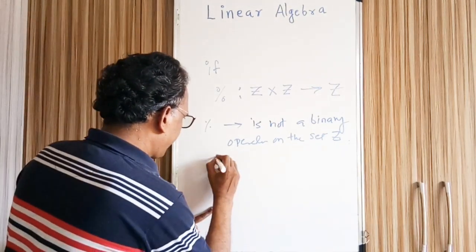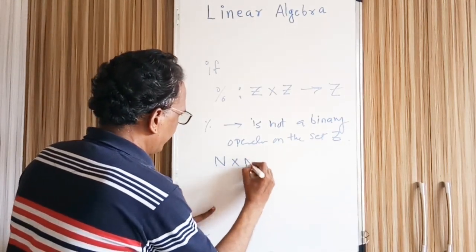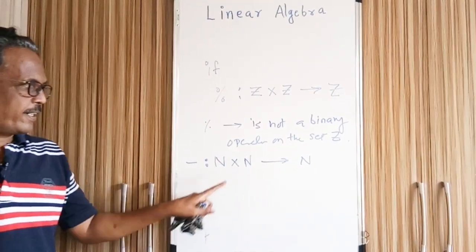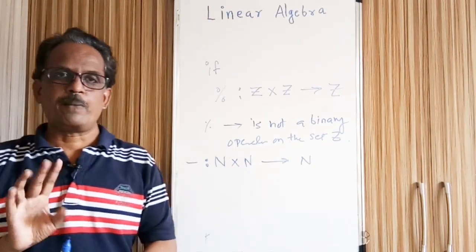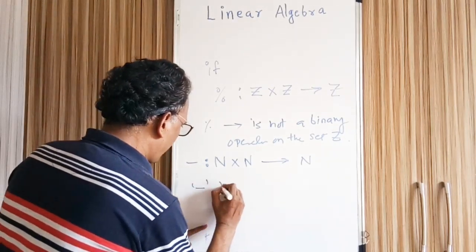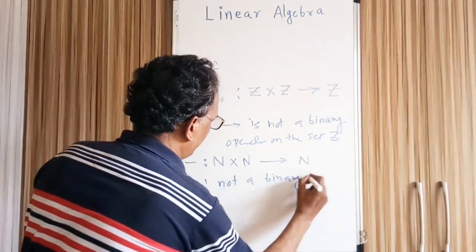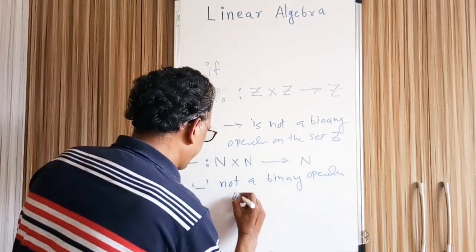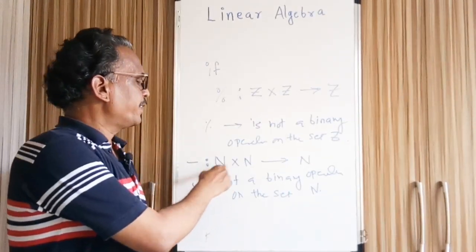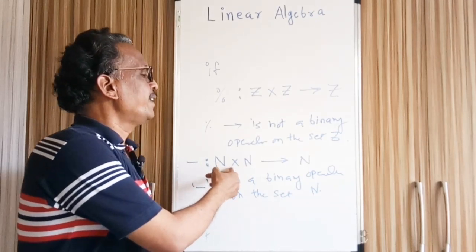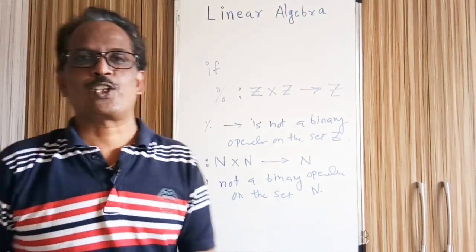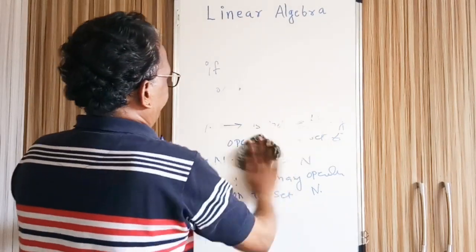Let us take the set of natural numbers again and see with respect to subtraction whether it follows the rule of binary operation. If I take two natural numbers — let us say 2 from here and 3 from here — 2 minus 3 gives minus 1, and minus 1 is not a natural number. Also, 3 minus 10 gives minus 7, and minus 7 is not a natural number. So subtraction is not a binary operation on the set N, where N is the set of natural numbers starting from 1.